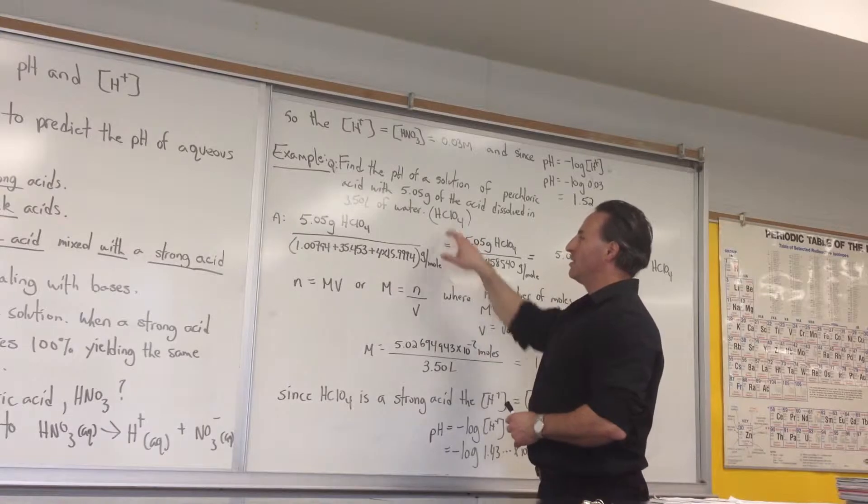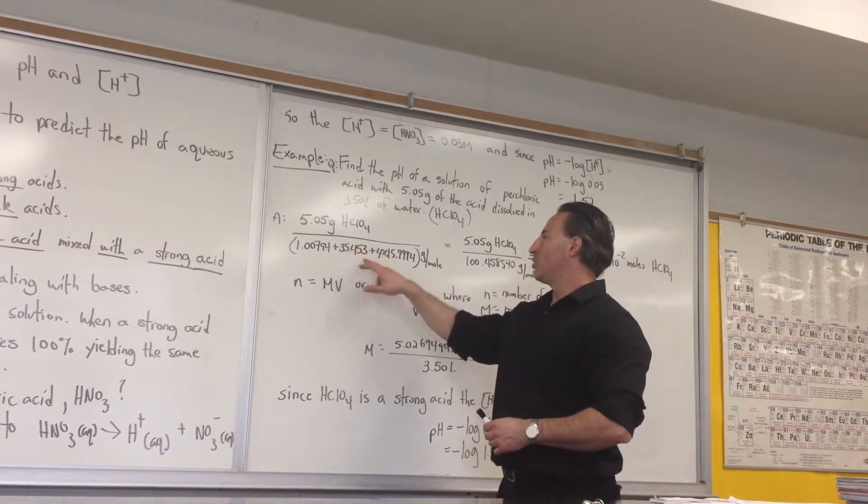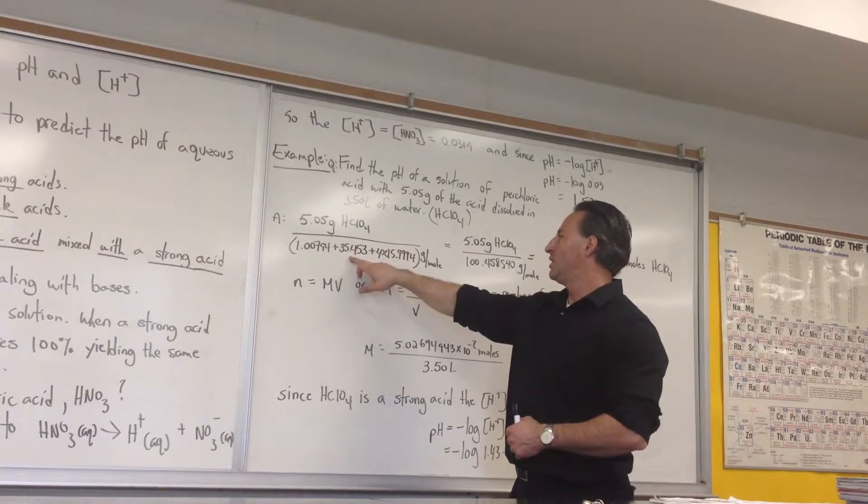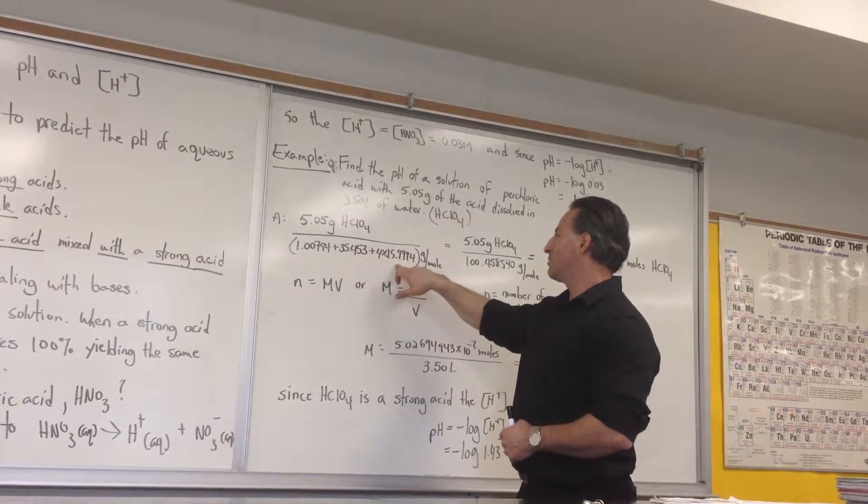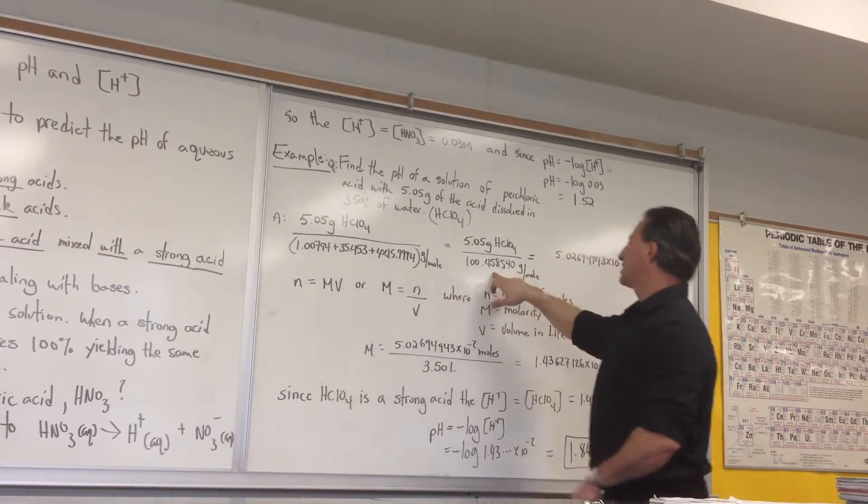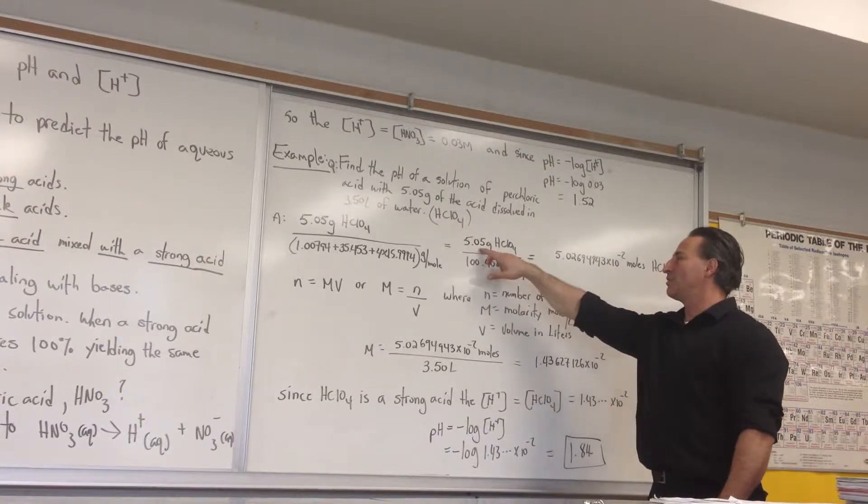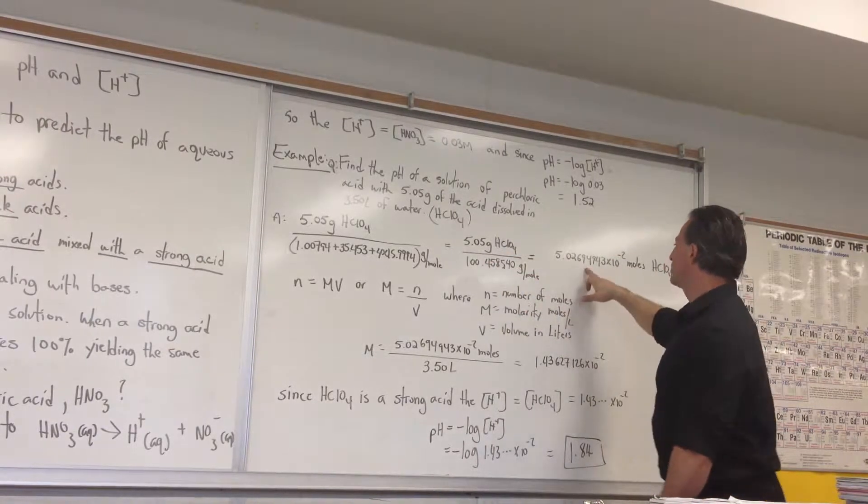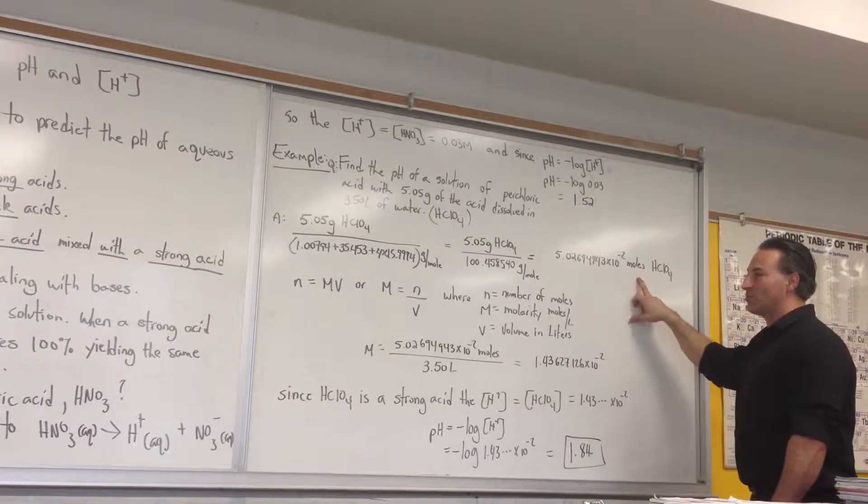This is perchloric acid, HClO4. We find the molar mass of perchloric acid: the mass of hydrogen, mass of chlorine, four times the mass of oxygen, gives you a molar mass of 100. There's 5.05 grams of perchloric acid, so you get 5.02 times 10 to the minus 2 moles of perchloric acid.